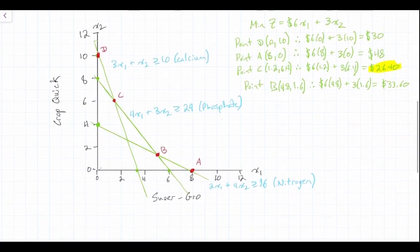So we recall from previous videos that our objective function is minimize Z equals 6x1 plus 3x2. That's our objective function.